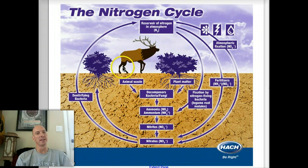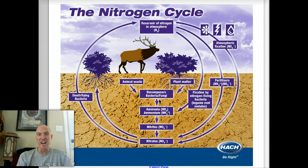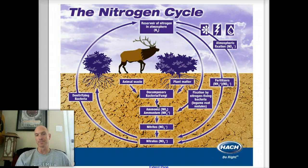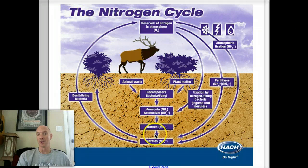Or that elk is going to defecate and urinate and lose some of that nitrogen that way. Manure makes a really great fertilizer, so it goes back to the ground. Then decomposers like fungi and more bacteria come in and break that down — it goes back into ammonia. That process is called ammonification. When it gets turned into the nitrites and nitrates, that's nitrification. So three processes so far: nitrogen fixation, nitrification, and ammonification.